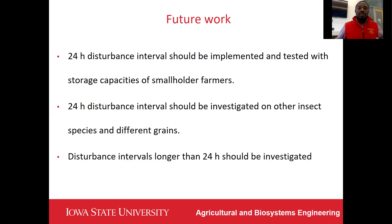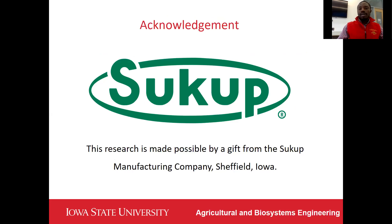For future work, we recommend that the 24-hour disturbance interval should be implemented and tested with the storage capacities of smallholder farmers. The 24-hour disturbance interval should also be investigated on other insect species apart from maize weavers, as well as different types of grains. Disturbance intervals longer than 24 hours should be investigated, since 24 hours proved effective in this study. We would like to acknowledge the Sukup Manufacturing Company of Sheffield, Iowa for their gift to support this research. Thank you.